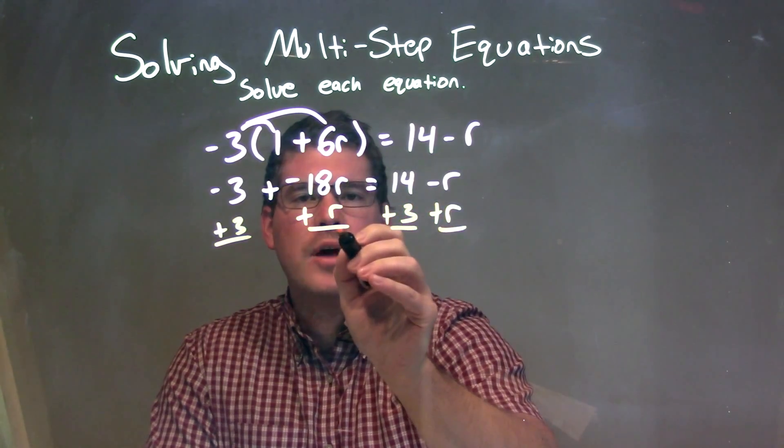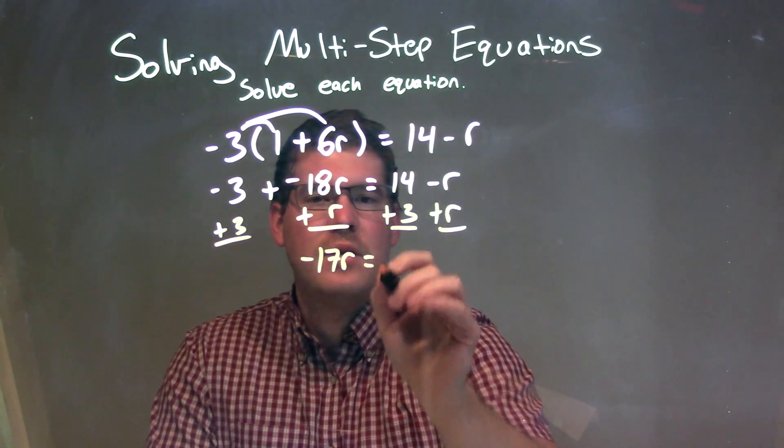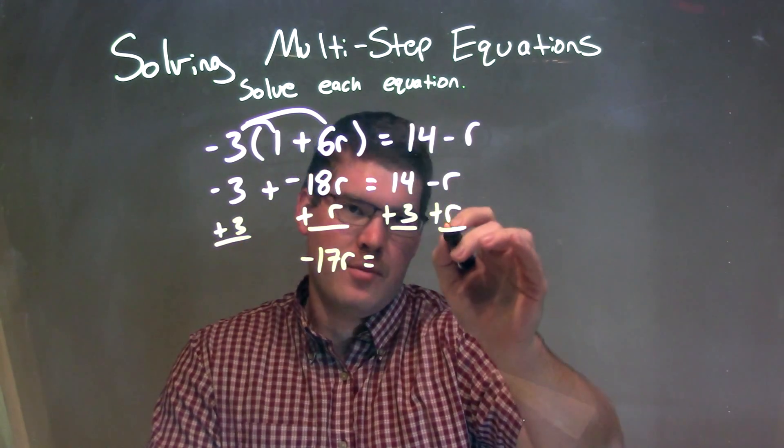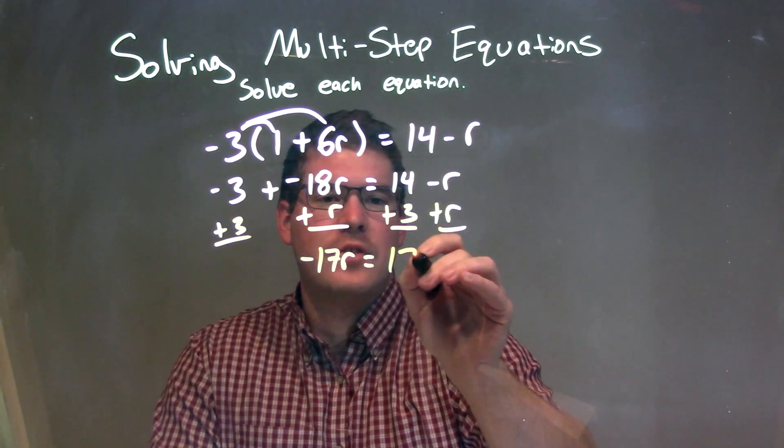Well, negative 18 plus r comes out to be a negative 17r. The negative 3 and positive 3 cancel, the negative r and positive r cancels, but the 14 plus the 3 when I brought it over is a positive 17.